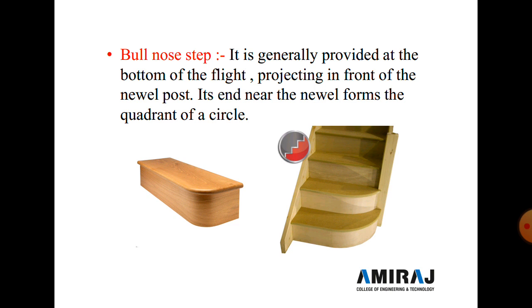The first type is the bull nose step. Similar to the bull nose brickwork discussed in a previous lecture, here the corner of the step is in a round shape. It is generally provided at the bottom of the flight, projecting in front of the newel post in the form of a quadrant of a circle. Bull nose steps are generally seen in residential, commercial, and industrial buildings.